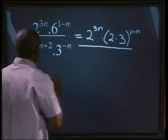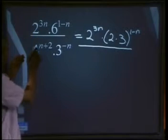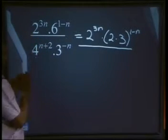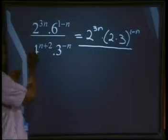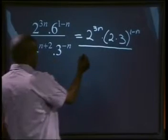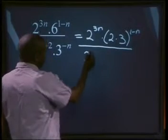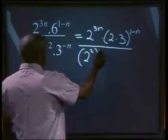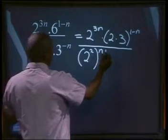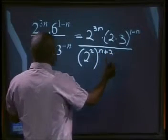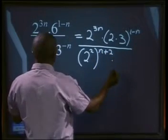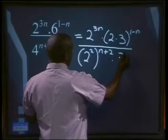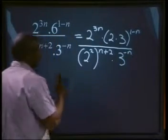Divided by 4 to the power of n plus 2. Now, 4 is not a prime number, so 4 can be written as 2 to the power of 2, all to the power of n plus 2, multiplied by 3 to the power of minus n.